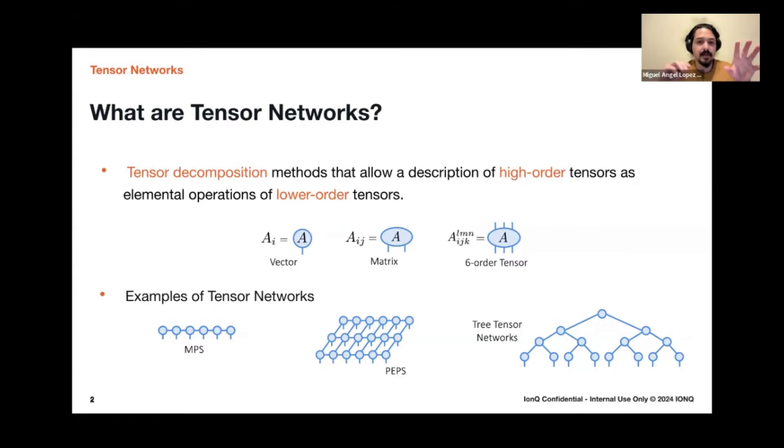So a one order tensor is a vector, two order tensor a matrix, six order tensor will be an element that has six indices. So by contracting multiple tensors, we can form these tensor networks in different topologies. So I'm showing here three examples as a linear connection, like a two dimensional network or something a little bit more complicated that is called a three tensor network.